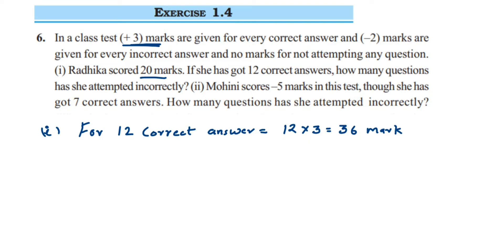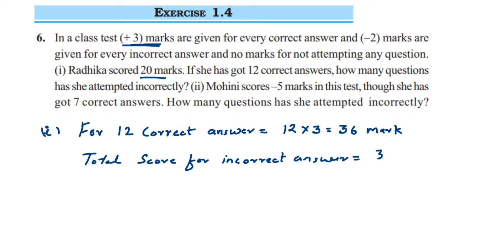We're going to find the difference between the correct answer marks and the total she got. If we know the total incorrect answer score, we can find the number of incorrect answers. Total score for incorrect answers: we subtract — total marks are 20, so it will be 20 minus 36, which equals minus 16. So she got minus 16 marks for incorrect answers.